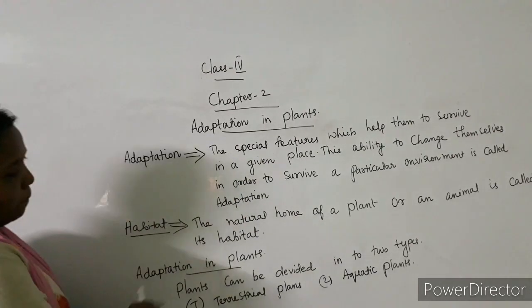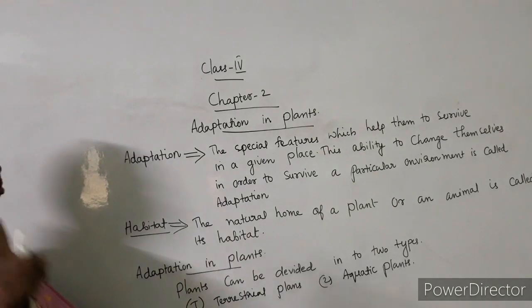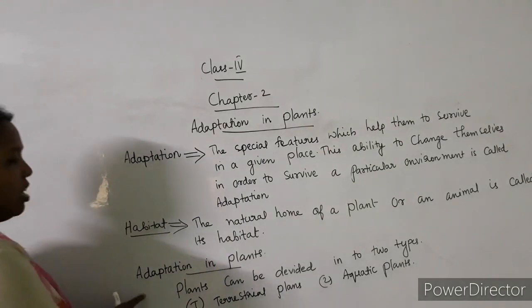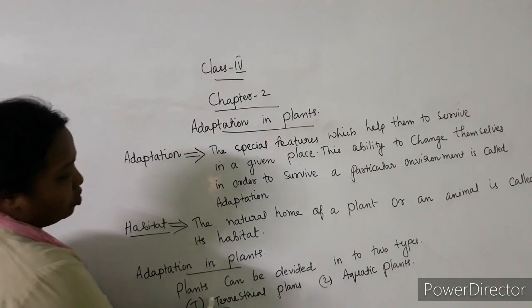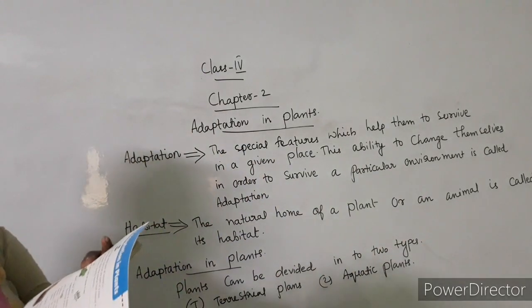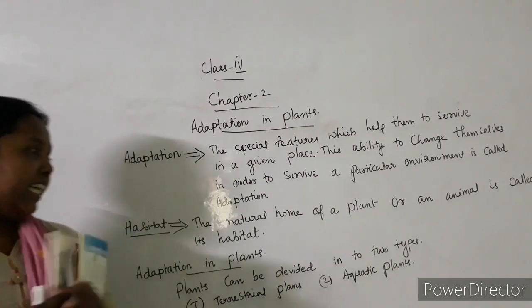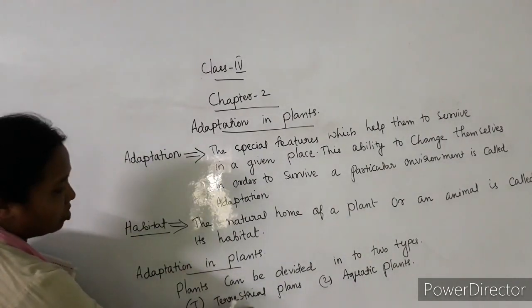Adaptations in plants. Plants can be divided into two types. The first one is terrestrial plants and the second one is aquatic plants.